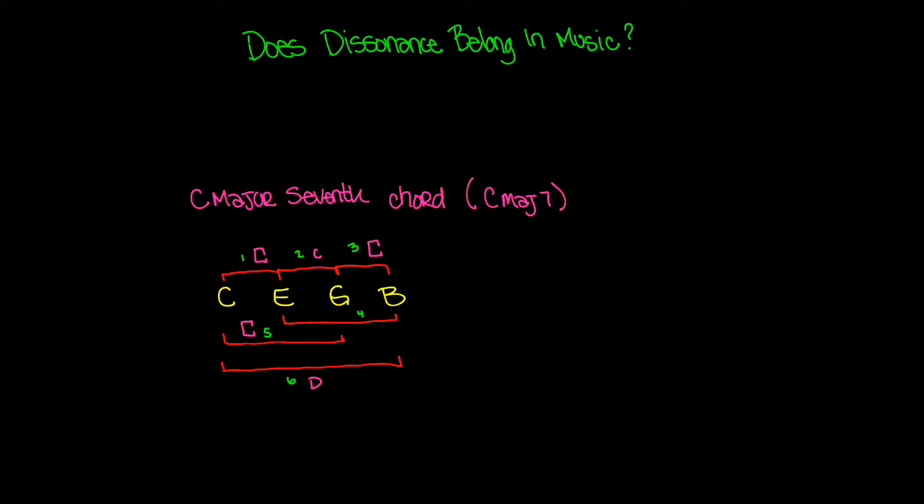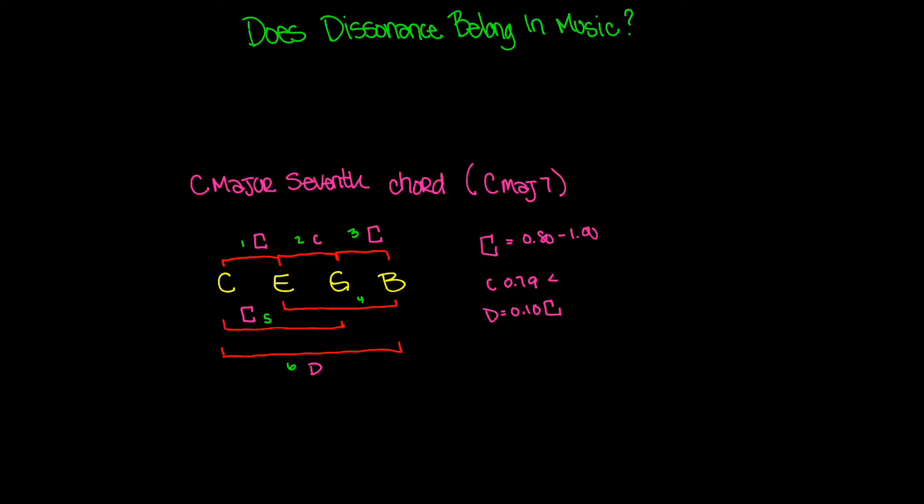So now let's consider, well, if something is very consonant, we're going to say that's going to be somewhere between 80% to 100% consonant. And if something is mildly consonant, it's going to be obviously like 0.79 or so and less. And if something is very dissonant, we're going to say that it has about 0.1% consonant. So D is going to be equal to 0.10 C.